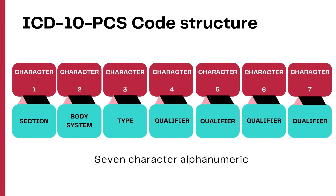These are the seven characters in the mental health section. The first character is the section itself. The second character identifies the body system. The third character is for the procedure type. The fourth character is a qualifier to indicate whether the counseling was educational or vocational. The fifth, sixth, and seventh characters are not specified for this mental health section and always have the value of none.